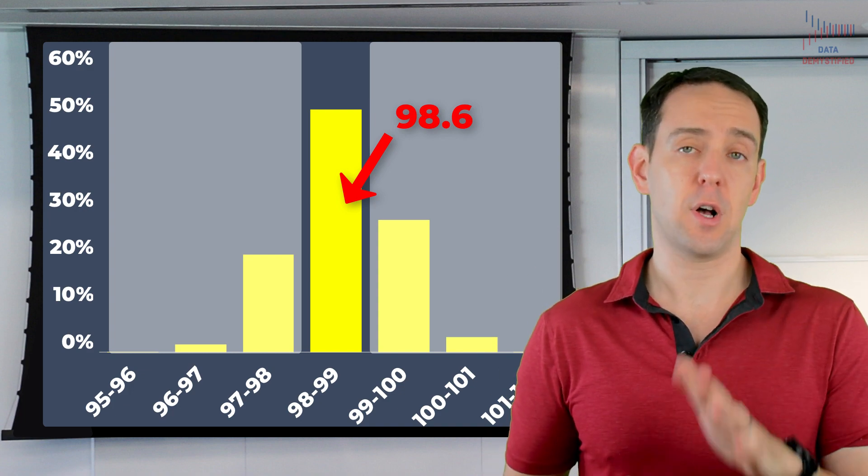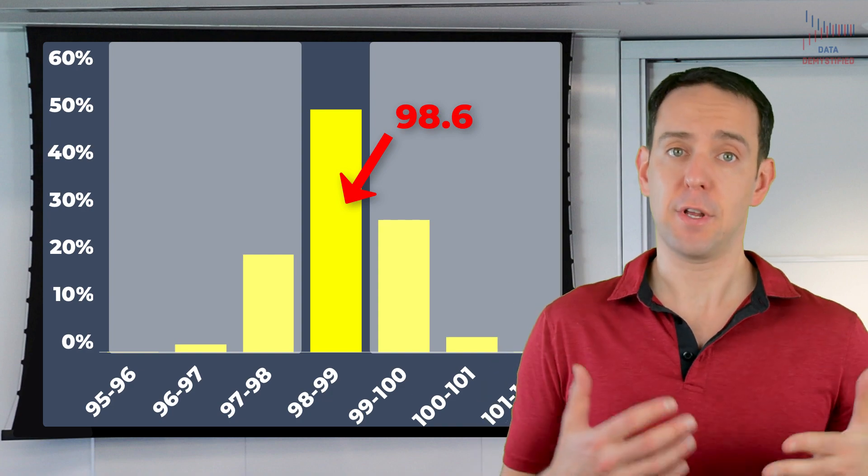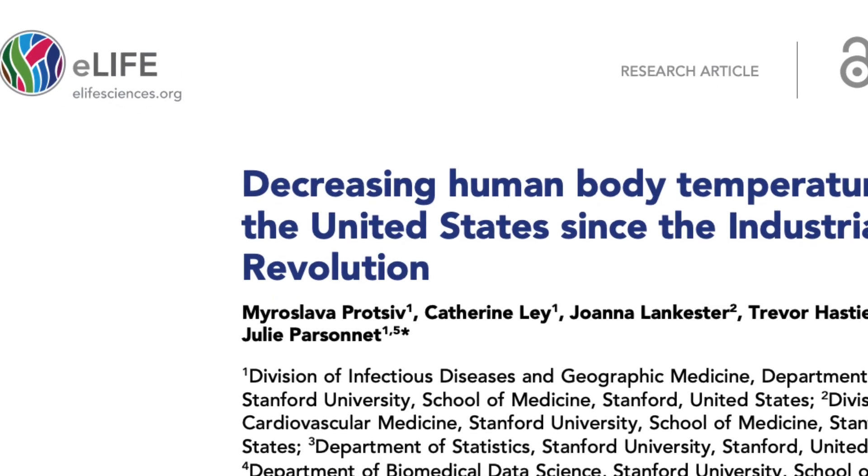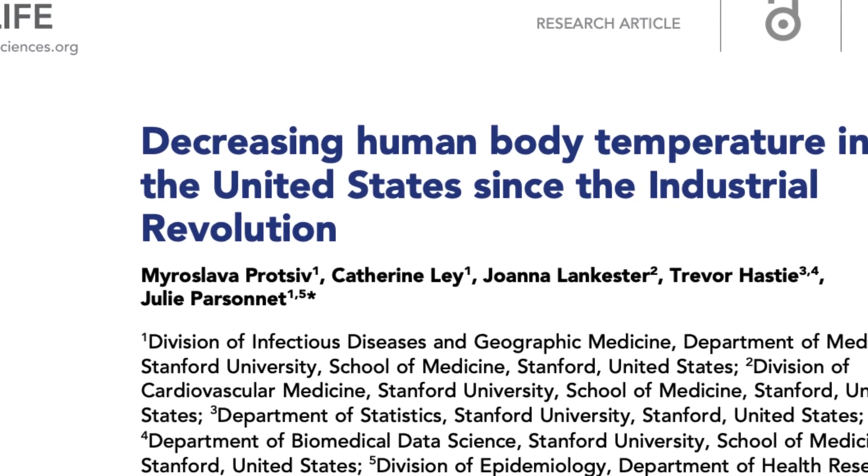So even though 98.6 was the average, most people studied had body temperatures below 98 degrees or above 99 degrees. In other words, what was actually most typical in terms of frequency wasn't 98.6 degrees at all. Yes, 98.6 was the average across all people, but there was a lot of variation. If we ignore that variation and instead harp on 98.6 degrees being the right answer to normal body temperature, we are going to make a lot of mistakes about who is sick and who isn't.